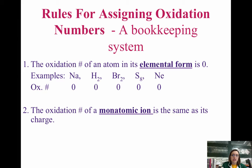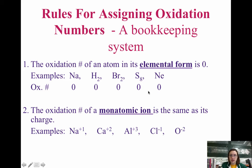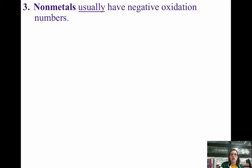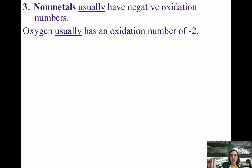The second rule is that the oxidation number of a monatomic ion — monatomic meaning one atom — is the same as its charge. Examples: Na⁺, Ca²⁺, Al³⁺, Cl⁻ — all of those oxidation numbers correspond exactly to the charge. You can think about oxidation numbers almost like the charge of the atom.